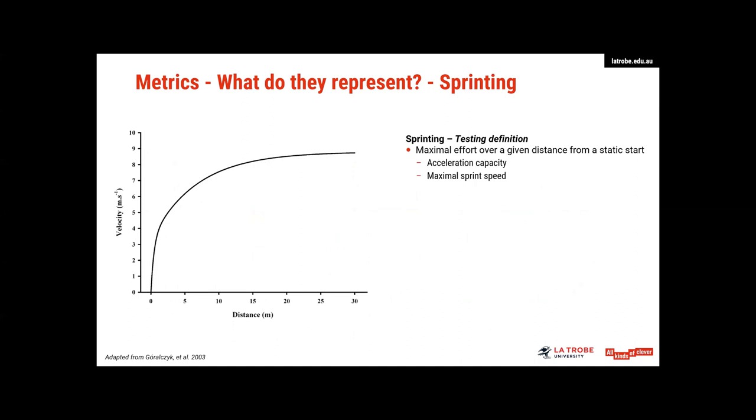So let's start with sprinting. Often when we think of sprinting, we think of sprint testing, which is usually represented by a maximal effort over a given distance from a static start. Ideally, these tests can provide a measure of acceleration capacity over 5 to 10 metres, and then maximal sprint speed could be determined via the fastest split over the test. Now, typically, I know this picture is only showing 30 metres, but for maximal sprint speed, we'd really want to be looking at at least a 40 metre test, if not further.